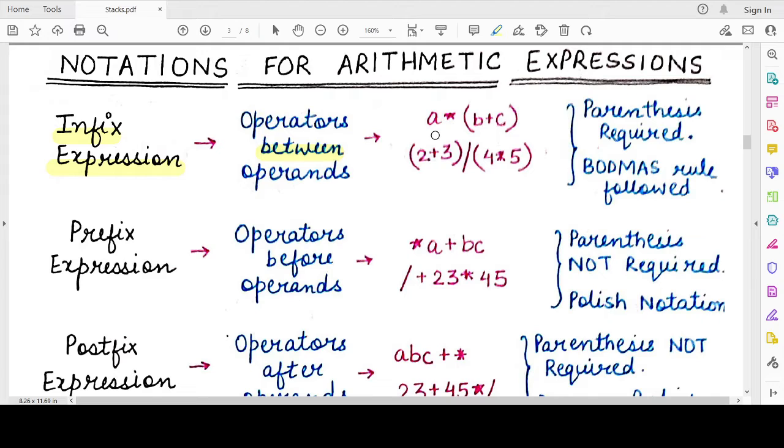For example, we have to perform multiplication between A and the sum of B and C. So here when we are performing the sum operation, the addition operation, we are writing the plus operator between the operands B and C. And similarly, when we have to perform the multiplication operation, we are writing the star or the multiplication operator between the two operands A and the sum of B and C.